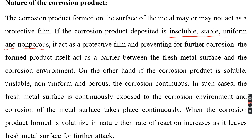The corrosion product should not interact with environmental constituents, should not break, should be uniform with the same thickness, and should be non-porous — then it acts as a barrier preventing further corrosion. On the other hand, if the corrosion product is soluble, unstable, non-uniform, and porous, corrosion continues because the product dissolves and does not adhere on the metal surface, leaving the fresh metal surface continuously exposed to the atmosphere.